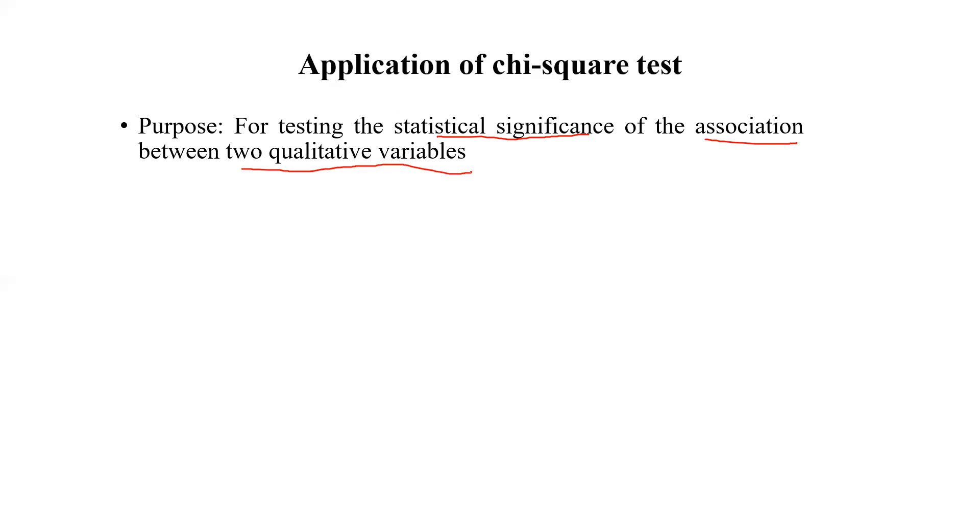For chi-squared, we can apply to find the association between two categorical variables. For example, if we want to know if there is any association between gender and smoking.